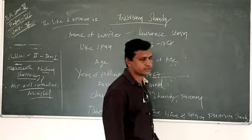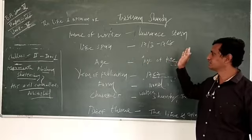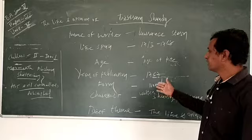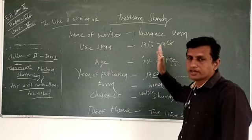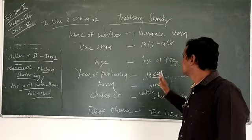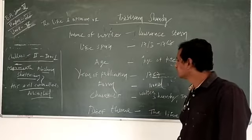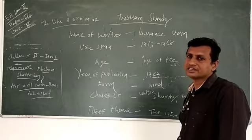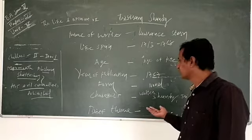He was born in 1713 and died in 1768. He belongs to the Age of Pope. The year of publication of the novel 'The Life and Opinions of Tristram Shandy' is 1760 to 1767. The form of the book Tristram Shandy: it is a novel, the beginning stage of the novel.